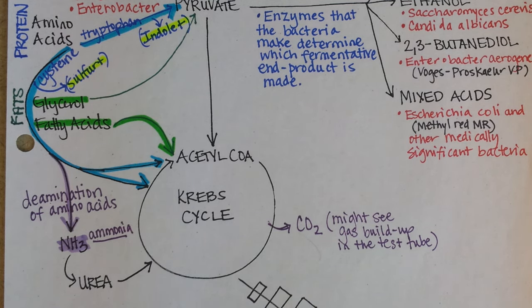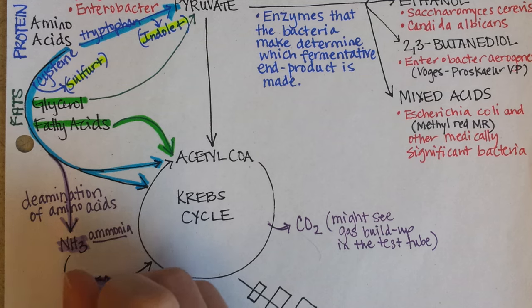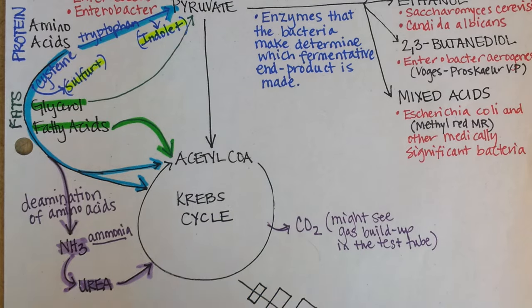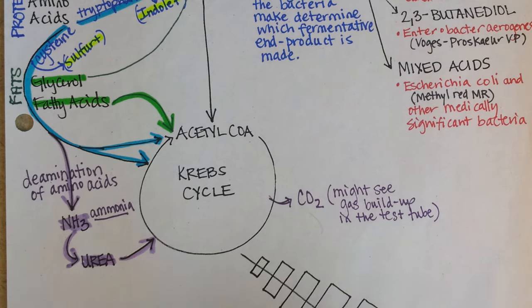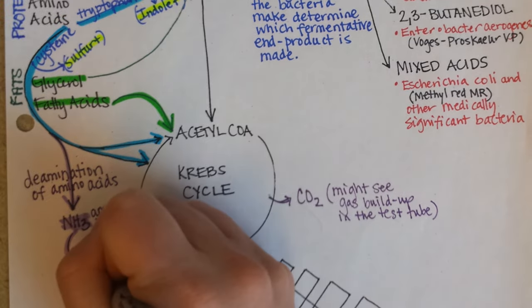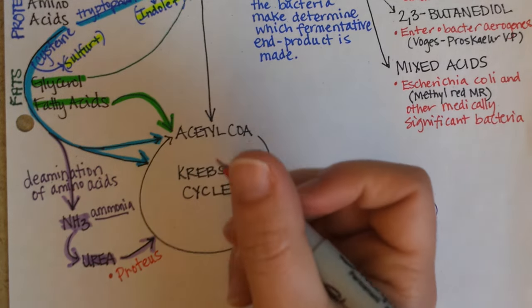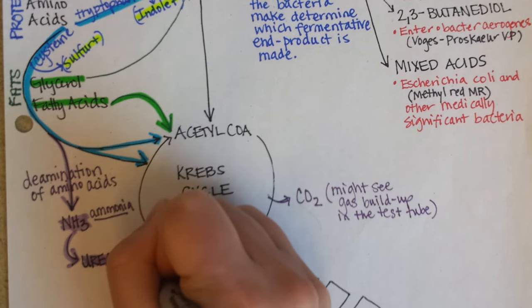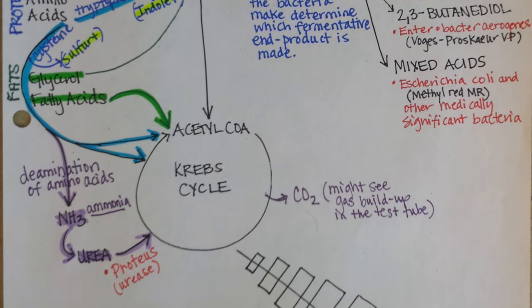Some bacteria, like Proteus, are actually able to take urea and use it to make ATP again, which is a very efficient process. In humans, urea is just a waste product, but for Proteus, urea is a food because it has an enzyme called urease. It's able to take what would be a waste product, put it back into the Krebs cycle, and get a little bit of ATP from it.